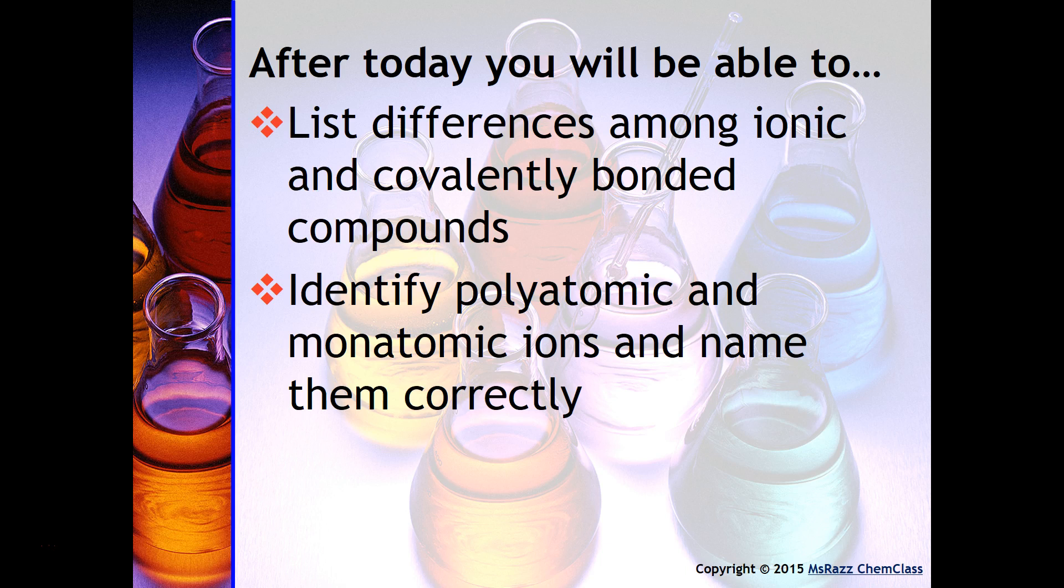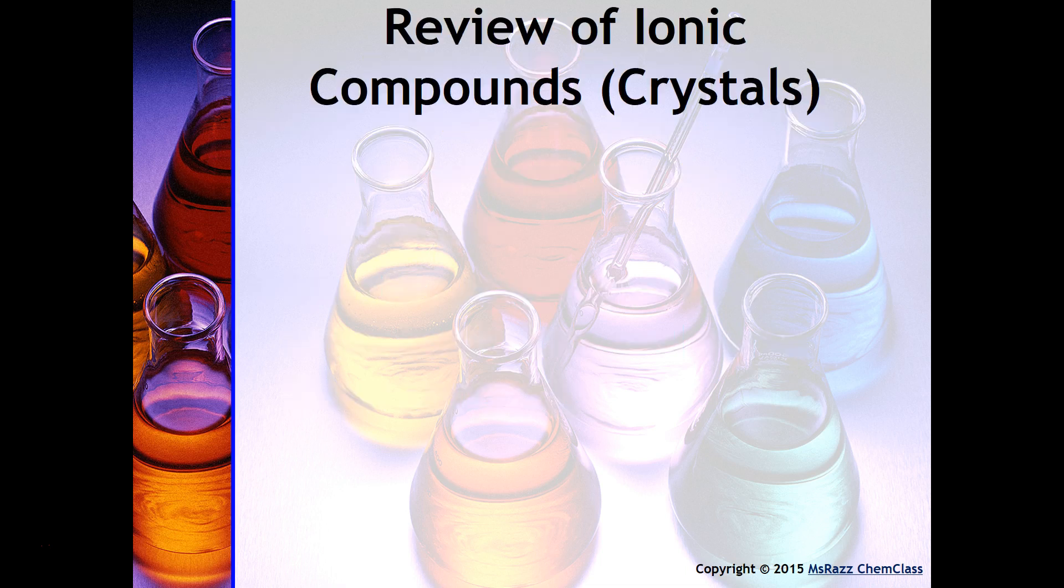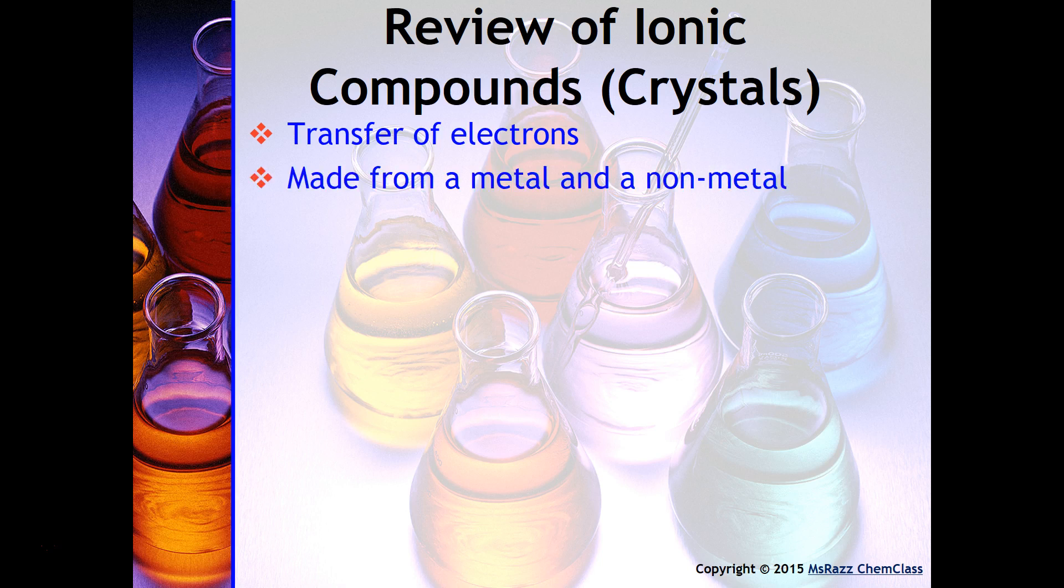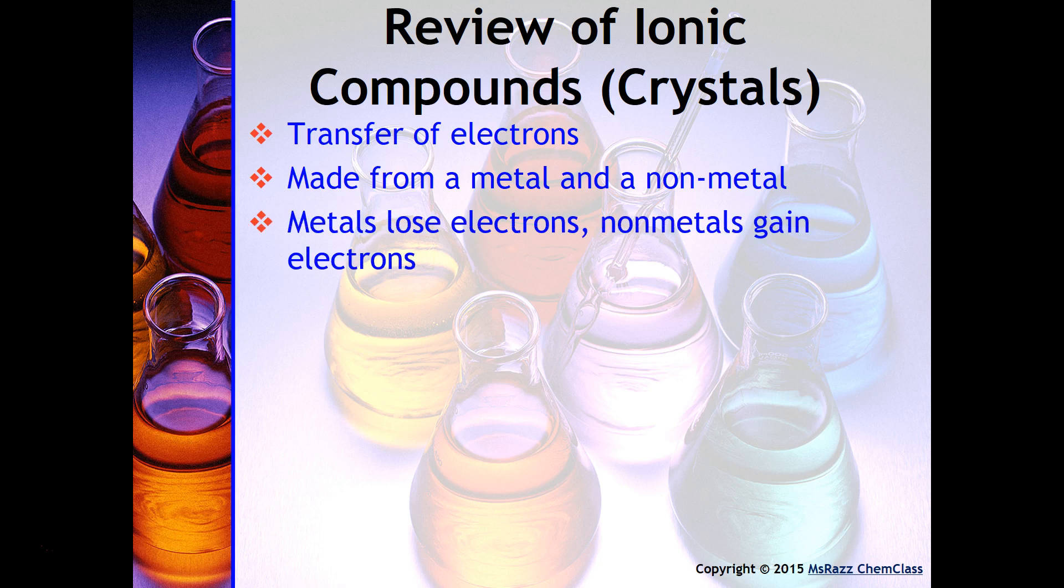Ionic compounds are made up of a transfer of electrons. This is how the ionic bond will form. You can identify an ionic compound in a list of compounds because it is made up of a metal and a non-metal. Metals have a tendency to lose electrons and non-metals have a tendency to gain electrons.